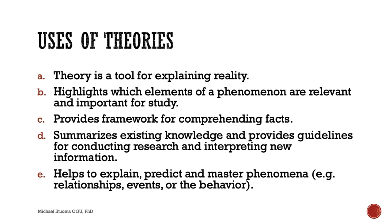Theories help us to explain, predict, and master phenomena. They can help us predict what is likely to happen in the future based on certain circumstances unfolding. We can make scientific guesses about what is likely to happen, and to a very large extent we might be correct, though not necessarily 100%, especially because the major element in social science — the human being — is not fully predictable.